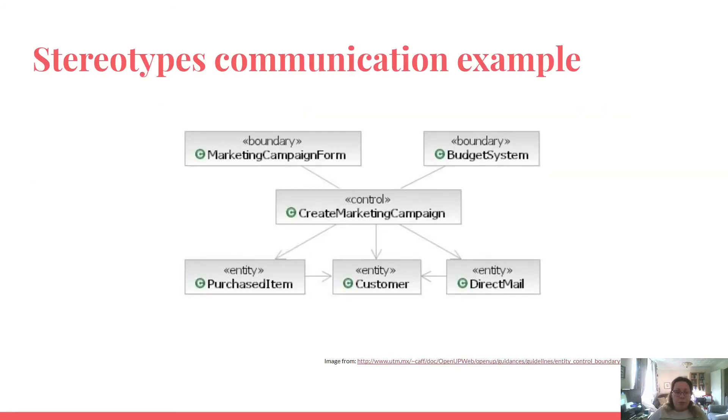This is a stereotypes communication example. In stereotypes communication, actors can only talk to boundary objects. Boundary objects can only talk to controllers and actors. Then entities can only talk to controllers. And controllers can talk to boundaries and entities and to other controllers, but not to actors.